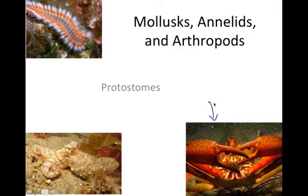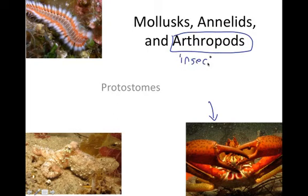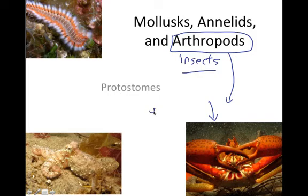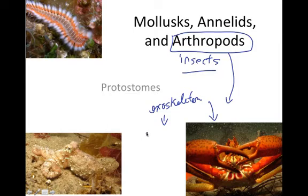We're also going to look at the arthropods, which are the most numerous group because they contain class Insecta — insects are the most numerous organisms. There are other types of arthropods, such as this cancer crab. Like all arthropods, they're going to have an exoskeleton, and the exoskeleton has an evolutionary link to the kingdom Fungi and some protists because it is made up of the chemical chitin.